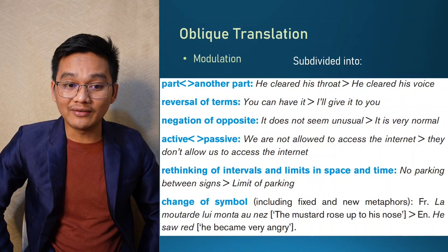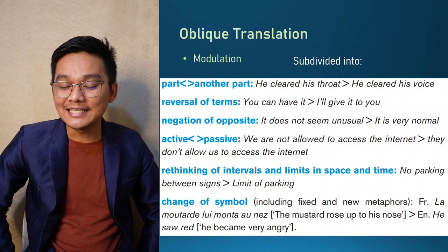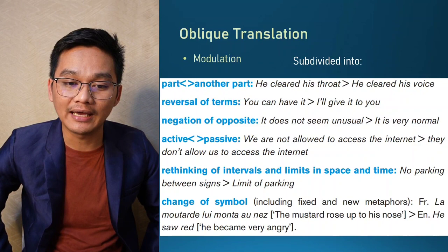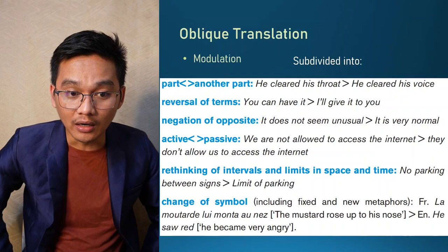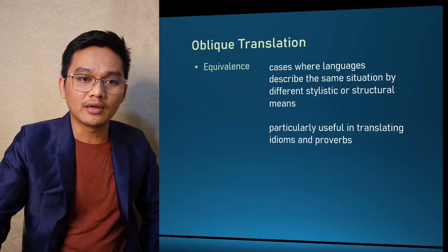The last subcategory of modulation is the change of symbol, which includes fixed and new metaphors. For example, in French 'la moutarde lui monte au nez' literally means 'the mustard rose up to his nose,' but in English it is translated as 'he saw red' or 'he became very angry.' The symbol here was changed from mustard/rose to red.